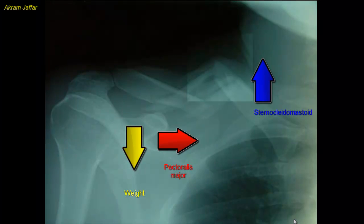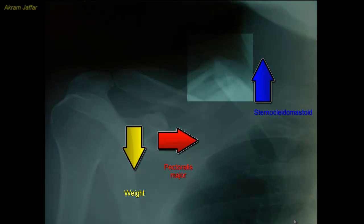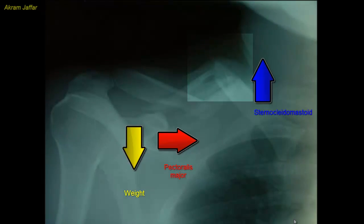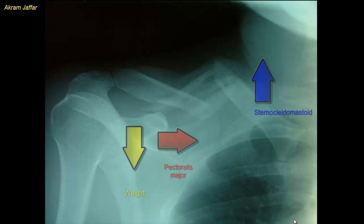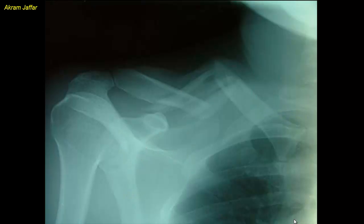Note the shadow of soft tissue pointing up at the site of fracture as the clavicle is subcutaneous. In spite of this superficial location of the clavicle, piercing of the skin — that's to say a compound fracture — is rare. This is attributed to the subcutaneous location of the platysma muscle, which allows the skin to move freely over the clavicle and protects the skin.